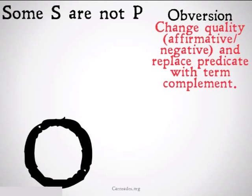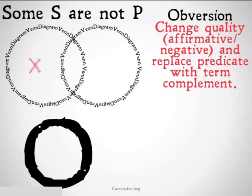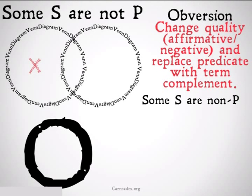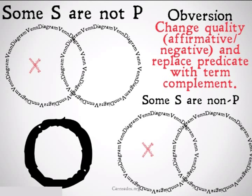Obversion for the O statement: 'Some S are not P' — we put our X over there in the S-only category. The obverse is 'Some S are non-P.' Once again, this looks pretty much like the exact same statement, so it's going to have the exact same Venn diagram. So this also is a valid form of argument.